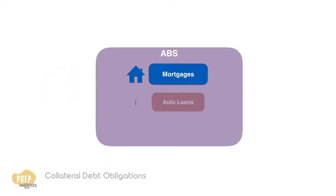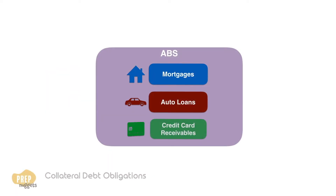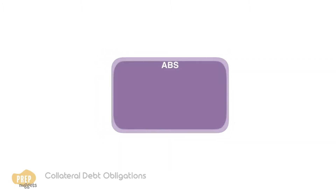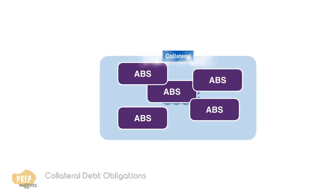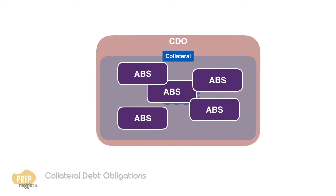Thus far we know that ABS are structured securities backed by a pool of financial assets such as mortgages, auto loans, or credit card loans. When we pool a number of ABS together as collateral, these securities are known as collateralized debt obligations, or CDOs.